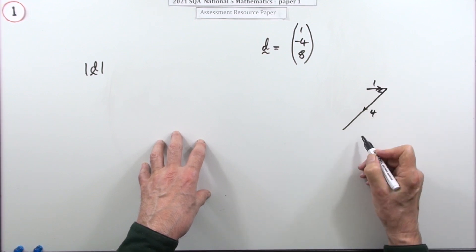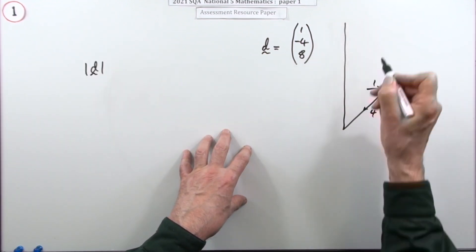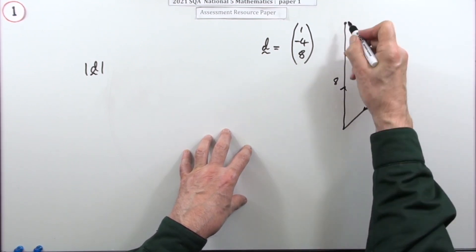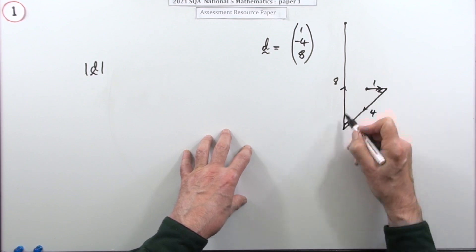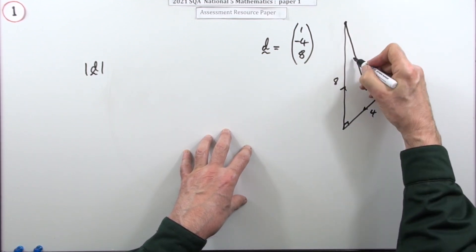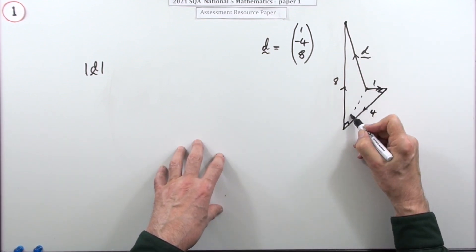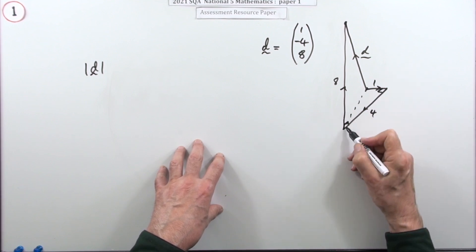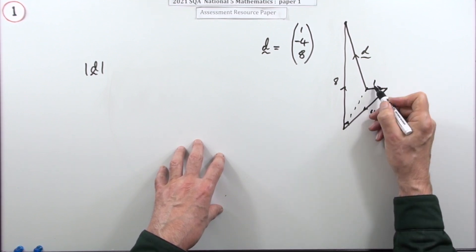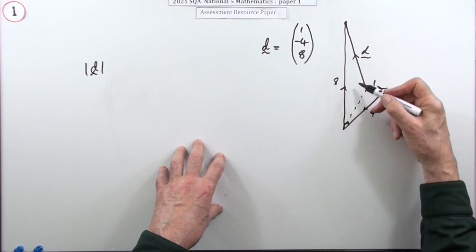That's a right angle because we're in three dimensions, and then you go eight straight up — that's where you finish. You've got two right-angled triangles: one right angle gives the longest side, so to get that side you square and add those two; then another right angle means to get the final side you square those two and add them.